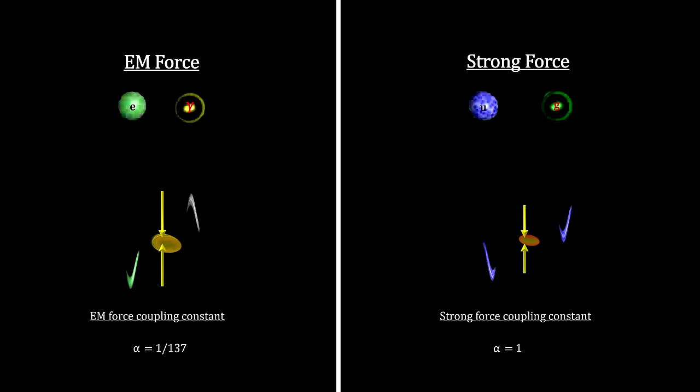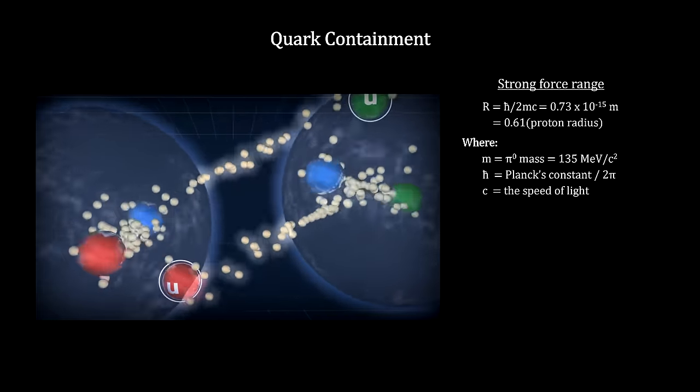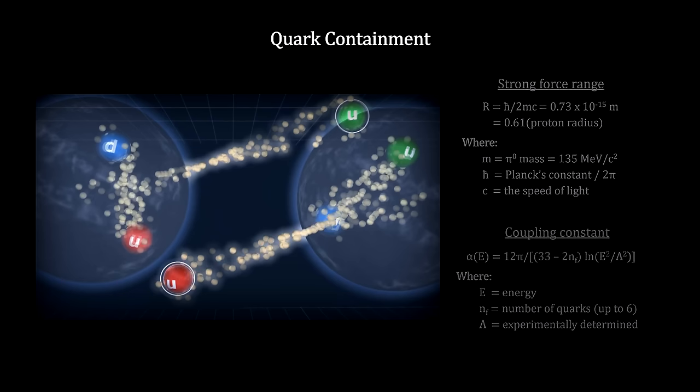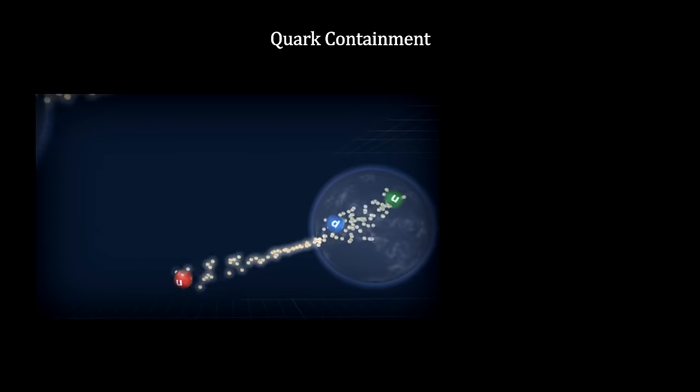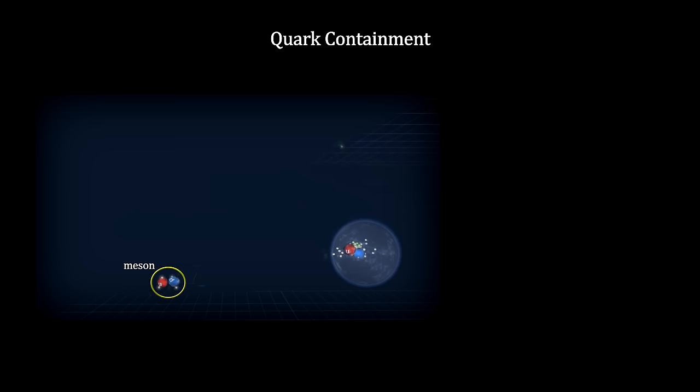Another significant difference between the EM force and the strong force is that the coupling constant for the strong force is 137 times stronger. And most importantly, where the EM force decreases with distance, the strong force increases with distance. As the distance between quarks grows to the diameter of a proton, the strength of the force approaches 18 tons. Imagine 18 tons focused on such a tiny spot. This makes it virtually impossible to separate quarks. In fact, with a force that strong, the energy it takes to separate two quarks in a hadron is greater than the energy it takes to create two new quarks. So before we reach separation energies, new quarks are created instead. These new quarks immediately combine to create new hadrons.